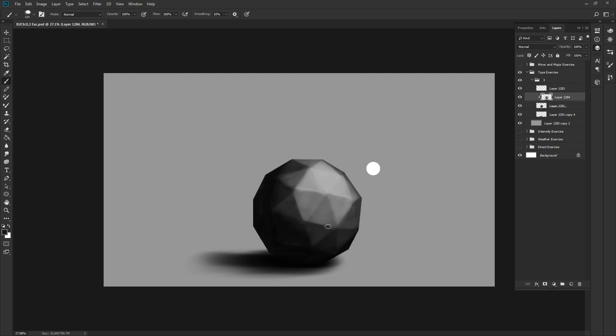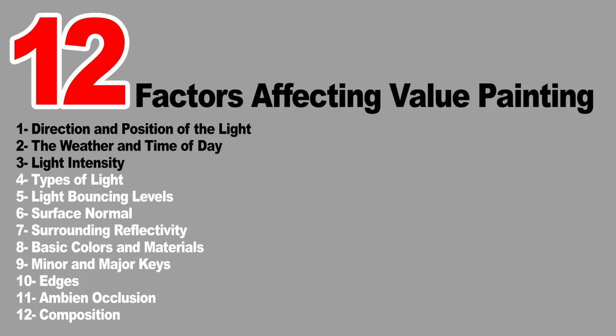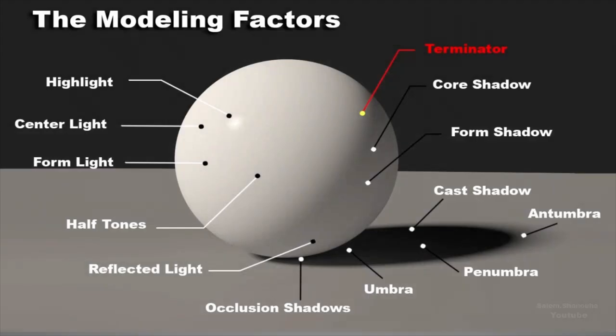Every type of light you use, every different size of it, every position you place it in will result in different values and reads to your scene. Now we can move on to the 5th factor: the light bounces. When light hits an object, it bounces off toward your eyes and that is basically how we see things. But light doesn't just bounce once — it keeps bouncing around and around until it no longer has the energy or photons to do so.